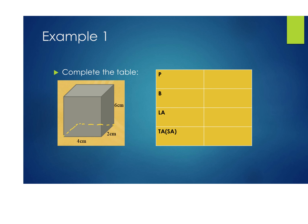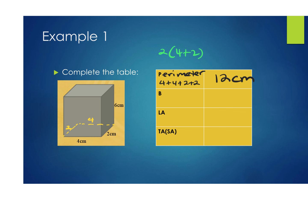When it's a rectangular prism, you can choose the base, and opposite sides are congruent. The capital P stands for perimeter. To find the perimeter of a rectangle, add 4 + 4 + 2 + 2, or do (4 + 2) × 2. Either way, you get 12 centimeters for the perimeter of this rectangle base.